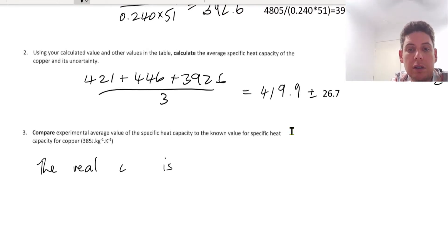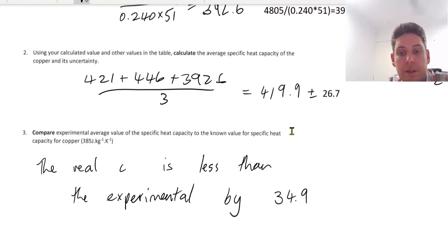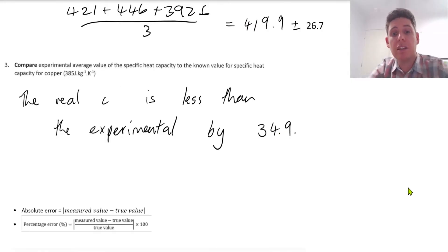So the real specific heat capacity is less than the experimental by 34.9. So that amount that I just calculated, the 34.9, is the absolute error. So it's the measured value minus the real value, or true value.